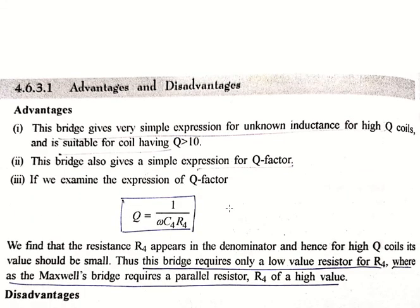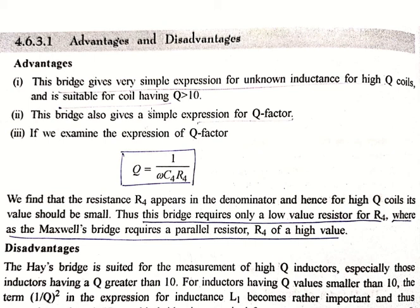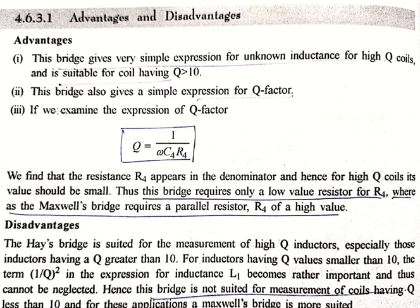Advantages of Hay's bridge: This bridge gives a very simple expression for unknown inductance for high values of Q, and is suitable for coils having Q greater than 10. It also gives a simple expression for the Q factor. Examining the Q factor expression, Q = 1/(ω·C4·R4), we find R4 appears in the denominator, so for high-Q coils its value should be small.